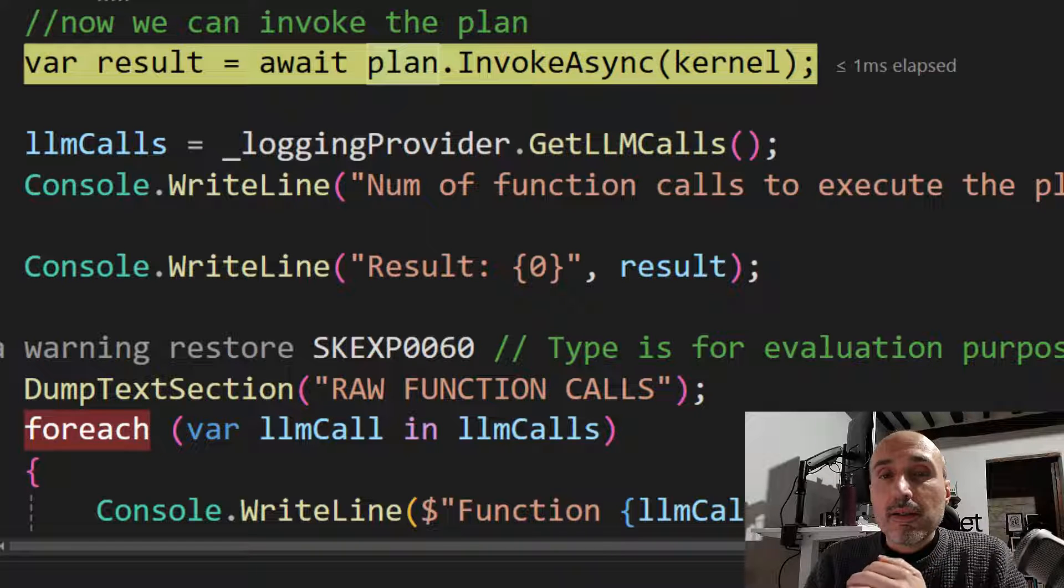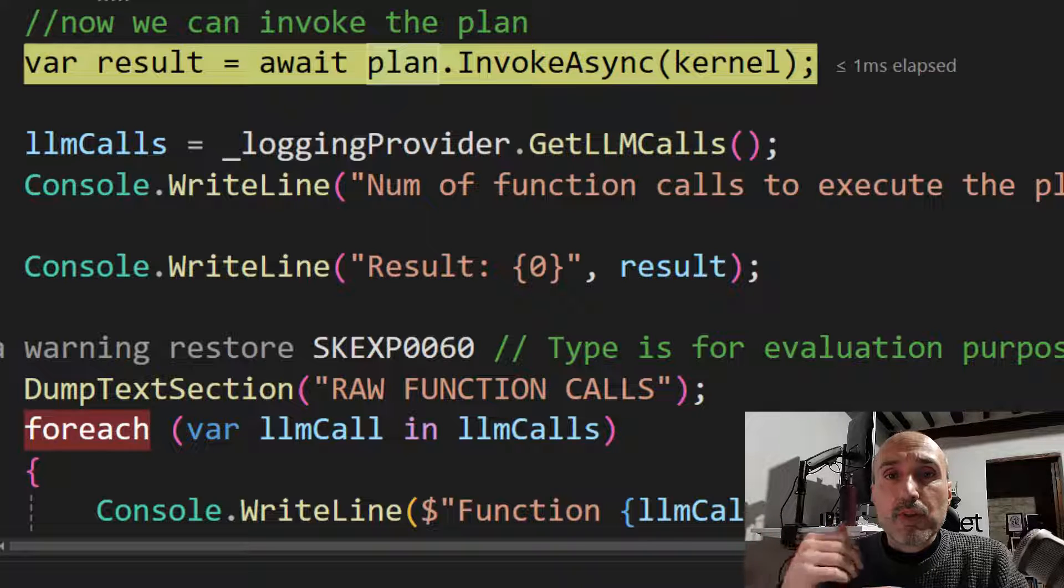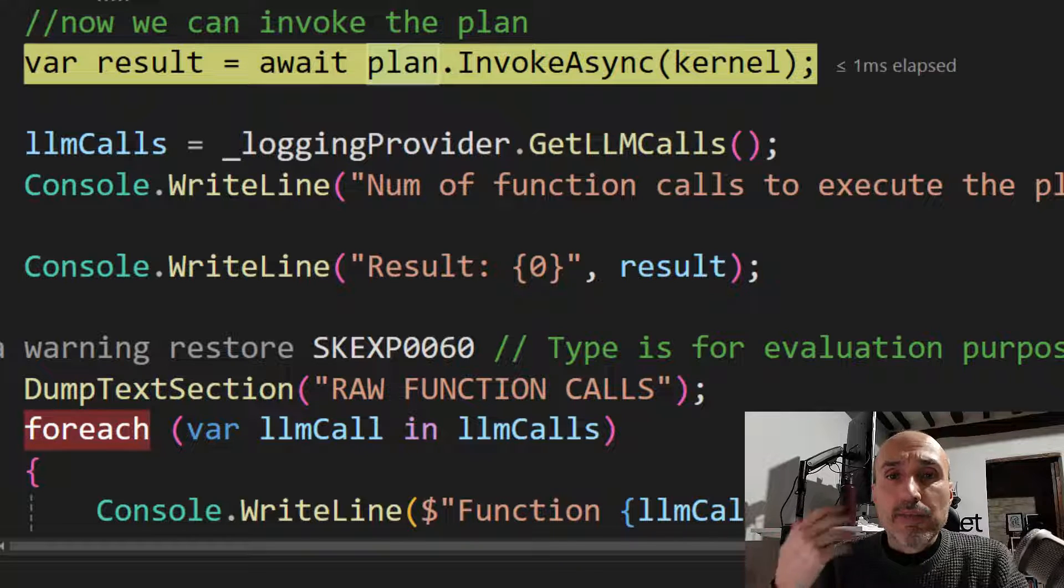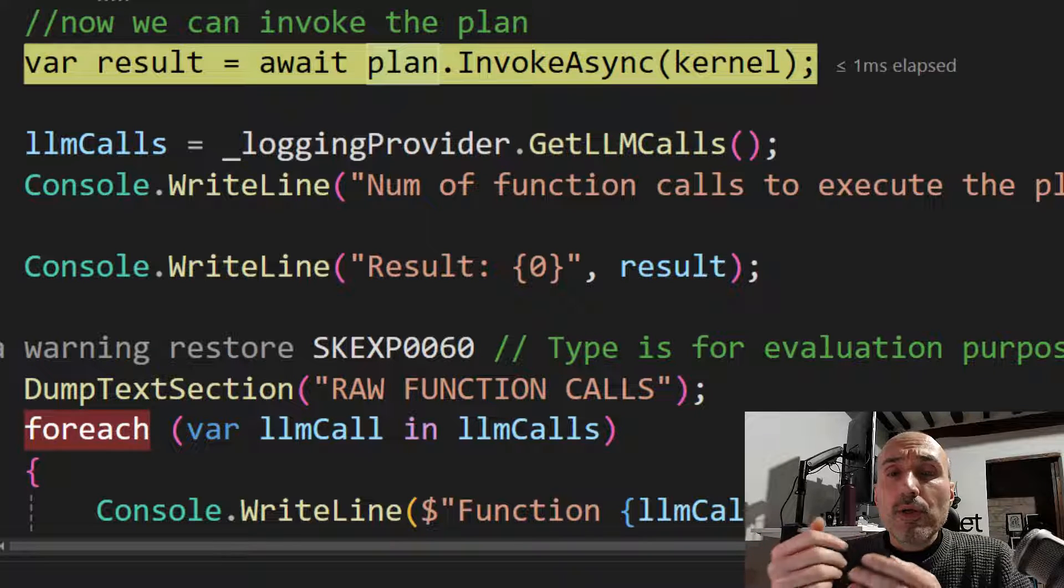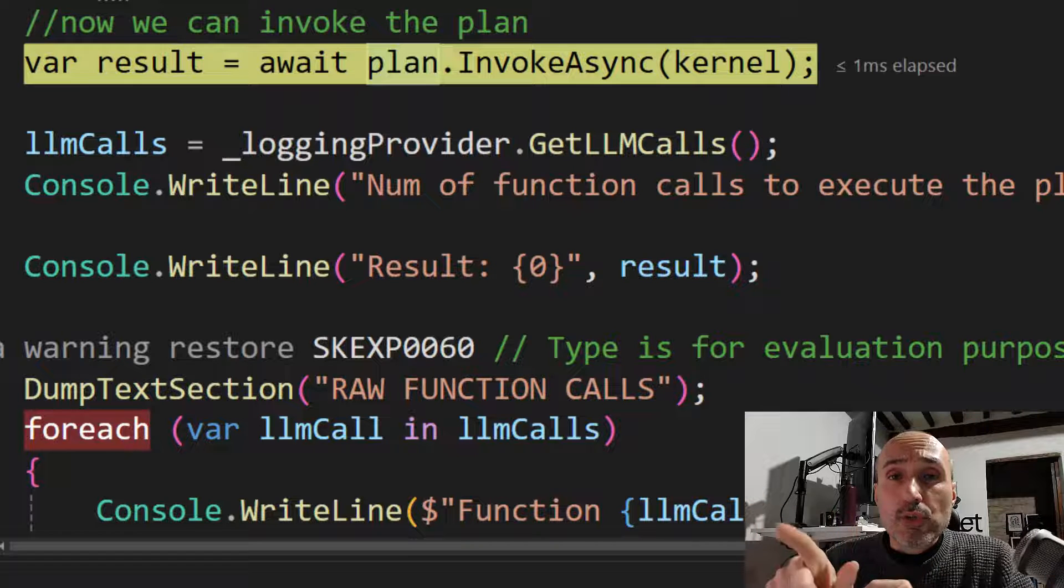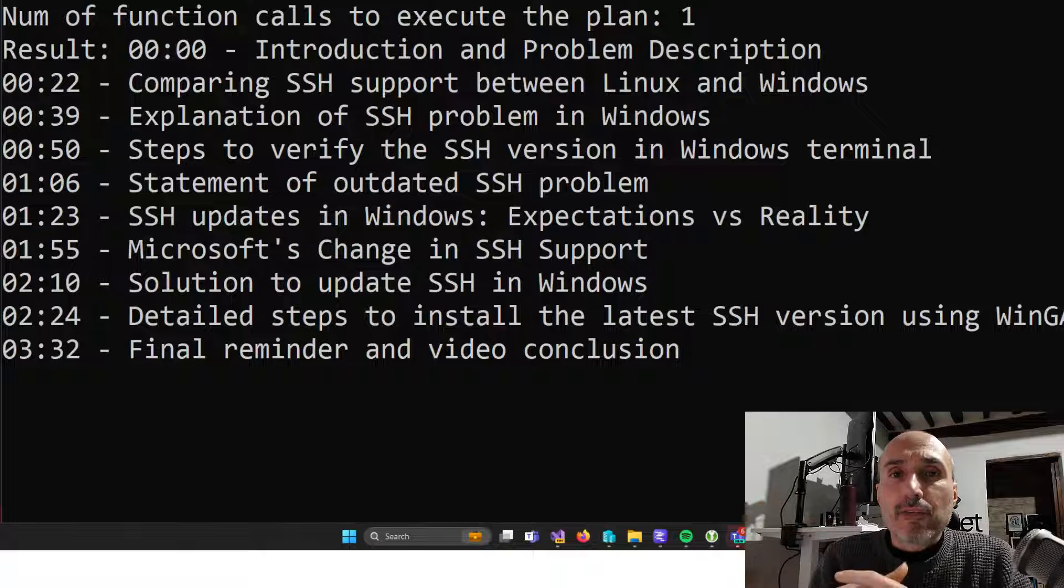Now that you have a plan, the only thing you need to do is call the invoke async of the plan object passing the kernel you want to use. So you can pass a kernel that has GPT-3.5 or it has GPT-4. But basically, if you only need to invoke plugins that do not require interacting with a large language model, actually, this is the moment in which Semantic Kernel starts using your plugins. And you can see that actually I got my answer.